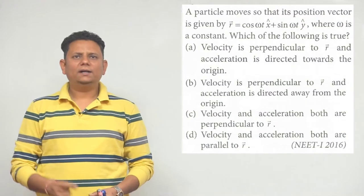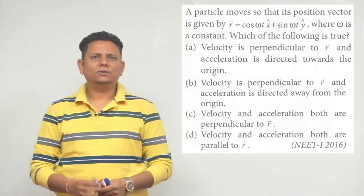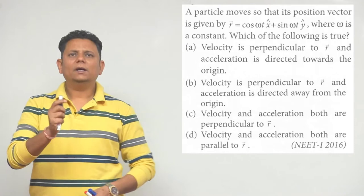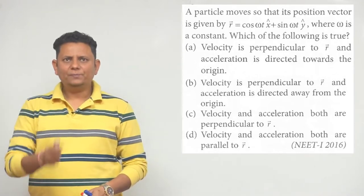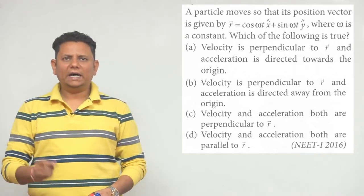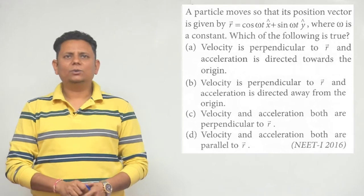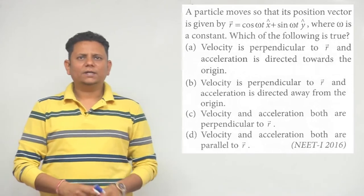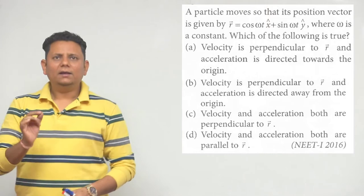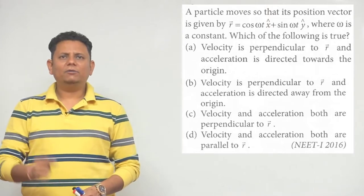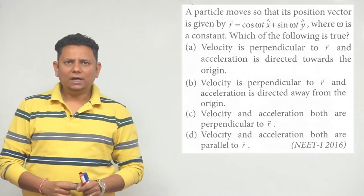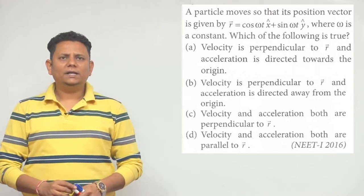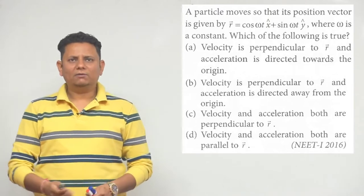The next question says: a particle moves so that its position vector is given by r = cos(ωt) x̂ + sin(ωt) ŷ, where ω is a constant. Option A: velocity is perpendicular to r vector and acceleration is directed towards the origin. Option B: velocity is perpendicular to r vector and acceleration is directed away from the origin. Option C: velocity and acceleration both are perpendicular to r vector. Option D: velocity and acceleration both are parallel to r vector.